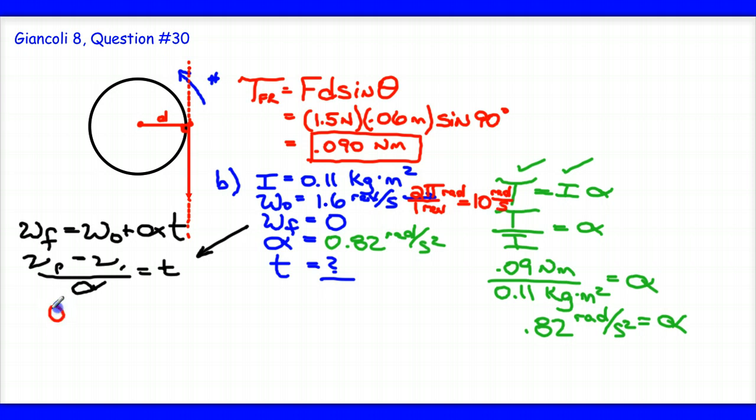So I'm going to get zero minus my initial angular velocity of 10 radians per second. And I need to divide it by my angular acceleration. And it looks like I've made a sign mistake here.